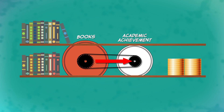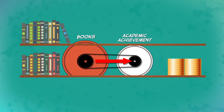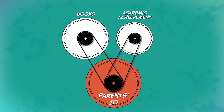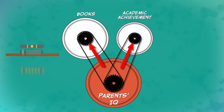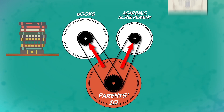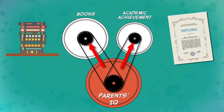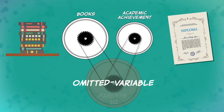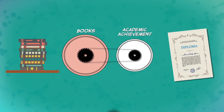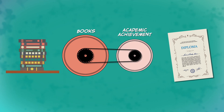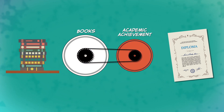But wait — is it the number of books on your shelves that actually causes better academic performance? Is it possible that a higher IQ of your parents would lead to both more books on your shelves and better academic achievement for you? Looking at just books and academic performance without considering your parents' IQ would be a classic case of omitted variable bias. Or could we possibly be seeing what's called reverse causation? That is, academic achievement causes more books and not the other way around.